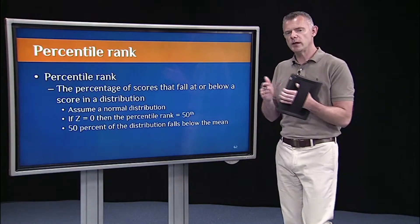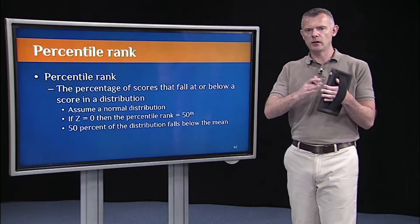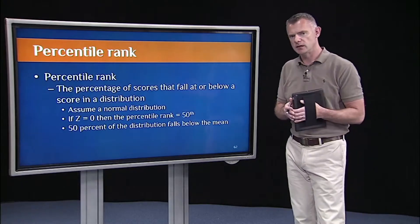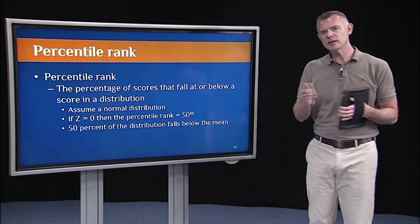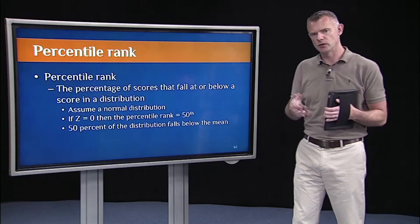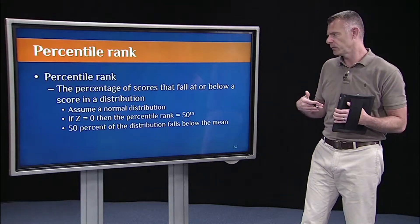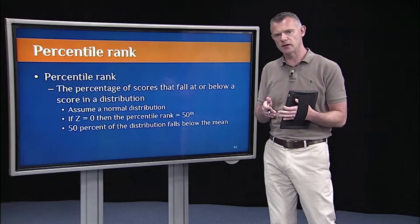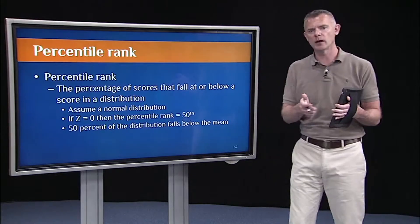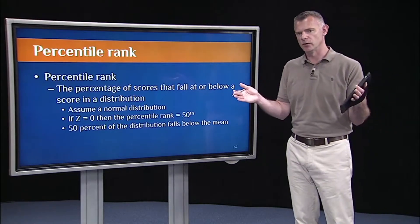The other thing we can do once we convert everything to Z scores and look at histograms in a Z distribution is we can easily get percentile rank, which is a useful statistic when we're looking at descriptive statistics and where individuals fall relative to others within a distribution.